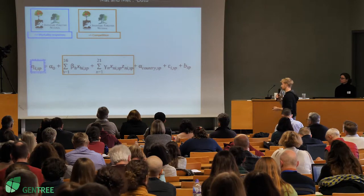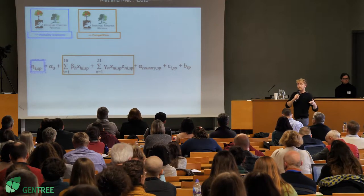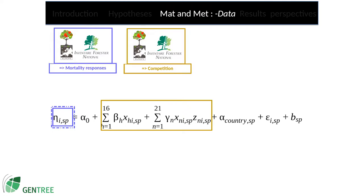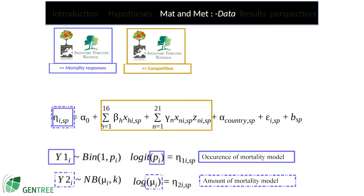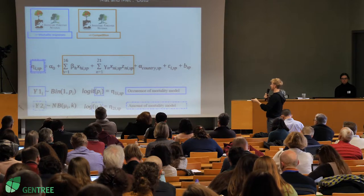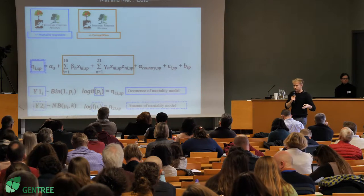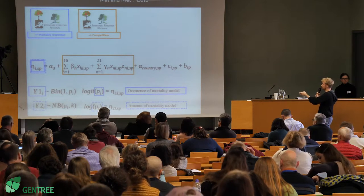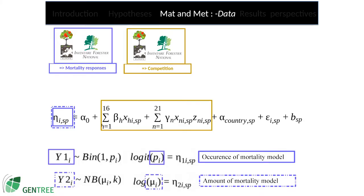From my national forest inventories data, I calculated two mortality responses that I used to calibrate two different models. I calibrated an occurrence of mortality model — the question is: can we find mortality or not in the plot? So it's a binomial response. And I calculated an annual rate of mortality in a model called the amount of mortality model. The question this time is not 'can we find mortality?' — it's 'there is mortality, how much?' And this is a negative binomial response.